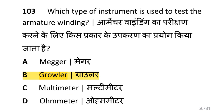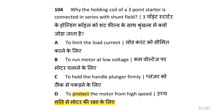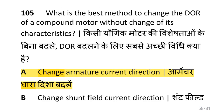Which type of instrument is used to test the armature winding? That is a growler. Why is the holding coil of a 3 point starter connected in series with shunt field? That is to protect the motor from high speed. What is the best method to change the direction of rotation of a compound motor without changing its characteristics? That is to change the armature current direction.